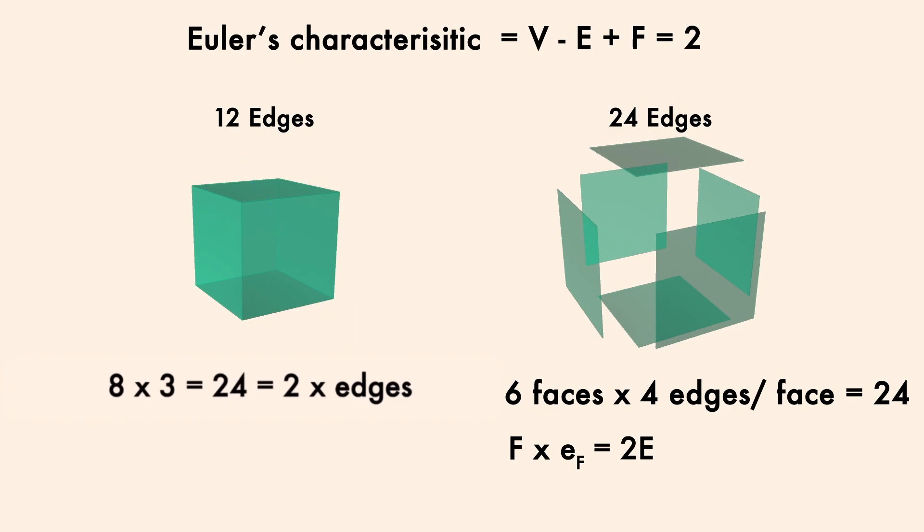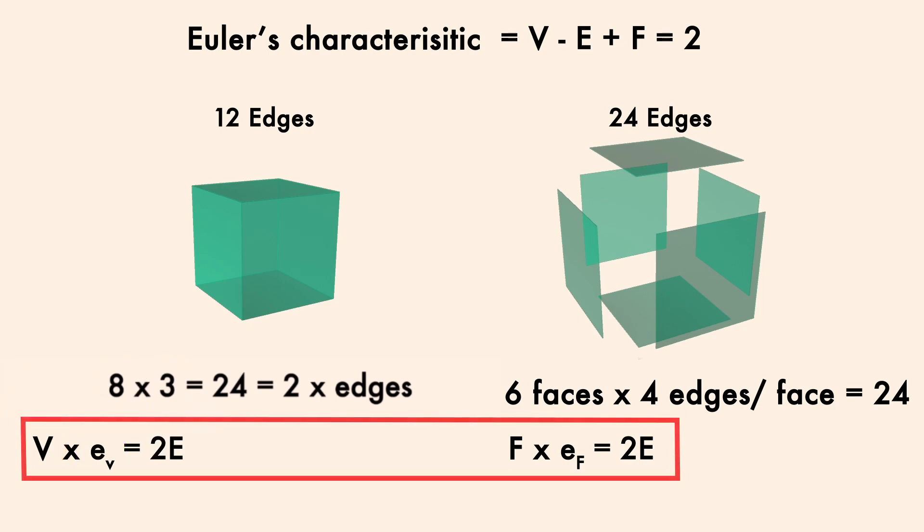But like before, we're going to put this in general terms by writing the number of vertices V, or 8 for the cube, times the edges touching each vertex e_v, which was 3 for the cube, equals twice the total number of edges. Now both of these equations apply to any of the platonic solids. I'm just using the cube as a visual.